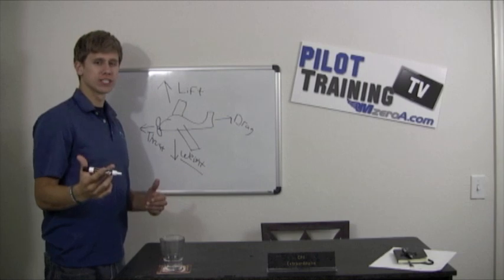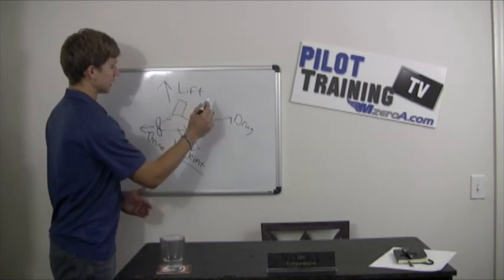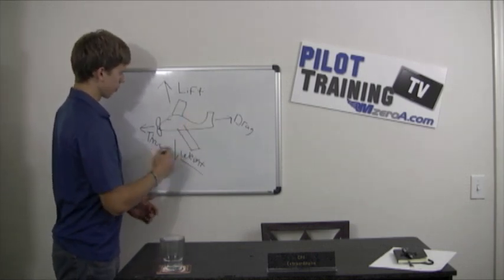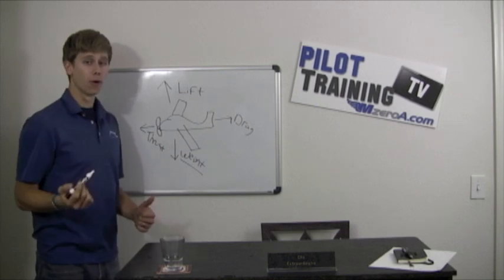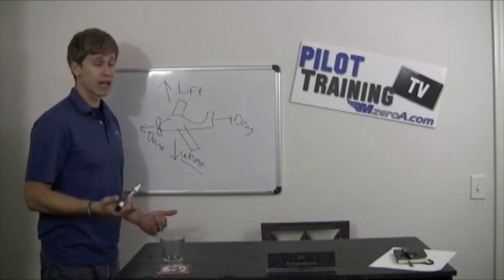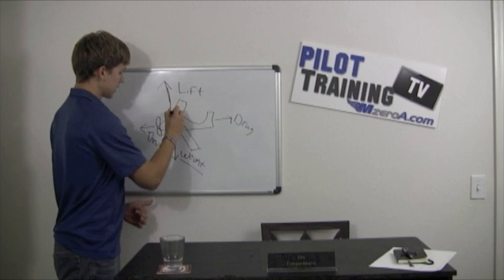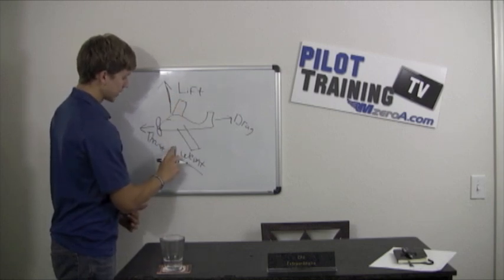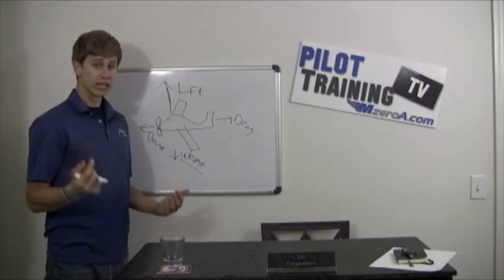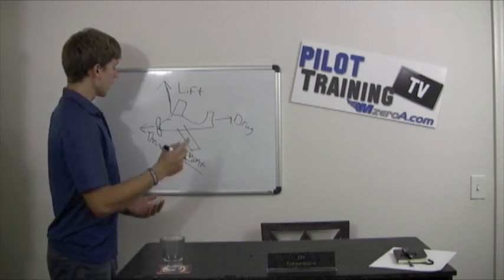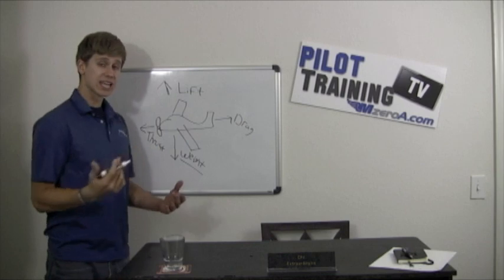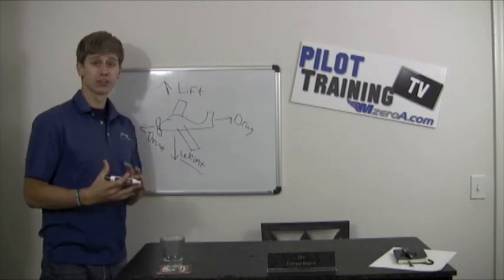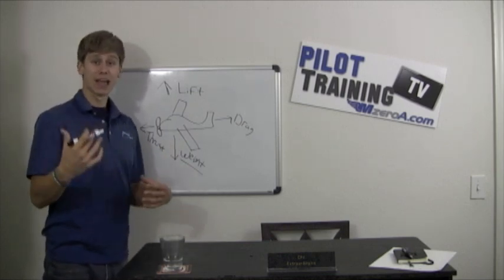So four forces acting on an airplane: lift, weight, thrust, and drag. When all four of these forces are equal, you have level flight. When lift exceeds weight or exceeds gravity, you're in a climb, and likewise, when that weight exceeds the gravity, we'll make the arrow smaller here, you have a descent. And when all four forces are equal, we have level flight.